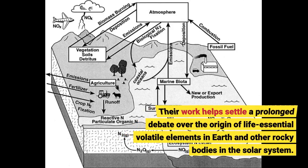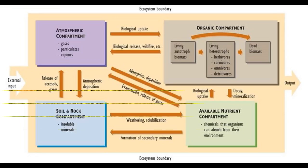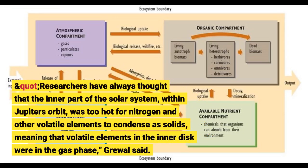Their work helps settle a prolonged debate over the origin of life-essential volatile elements in Earth and other rocky bodies in the solar system. Researchers have always thought that the inner part of the solar system, within Jupiter's orbit, was too hot for nitrogen and other volatile elements to condense as solids, meaning that volatile elements in the inner disk were in the gas phase, Grewal said.